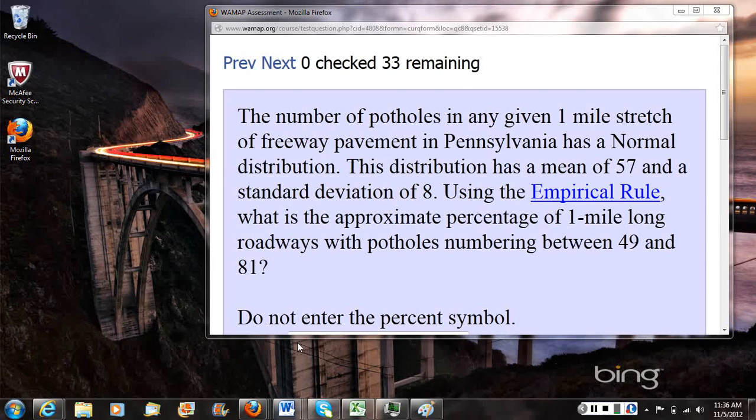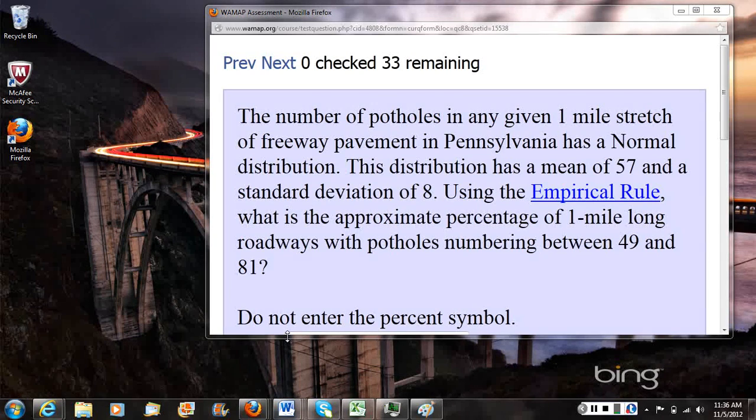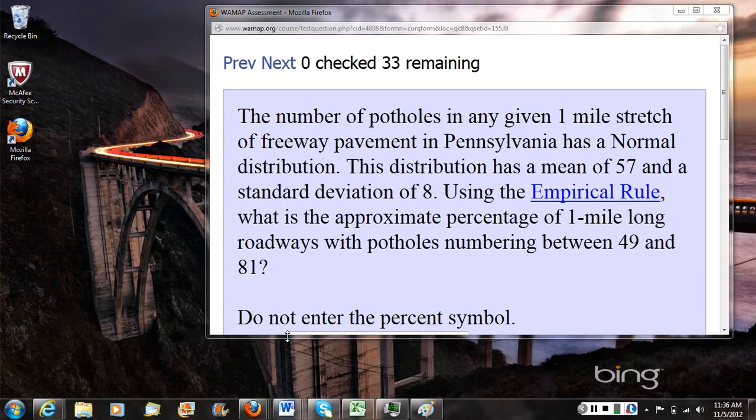The number of potholes in any given one-mile stretch of freeway pavement in Pennsylvania has a normal distribution. This distribution has a mean of 57, so 57 potholes on average, and a standard deviation of 8. Using the empirical rule, what is the approximate percentage of one-mile-long roadways with potholes numbering between 49 and 81?